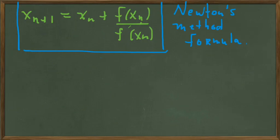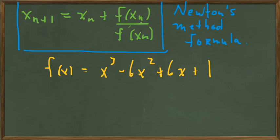So what we want to do is apply this formula to show that it will actually give us the root of a function by showing how it works with this function, f of x equals x cubed minus 6x squared plus 6x plus 1. And we'll show where the root is on that and then show how Newton's method will help us find that root.